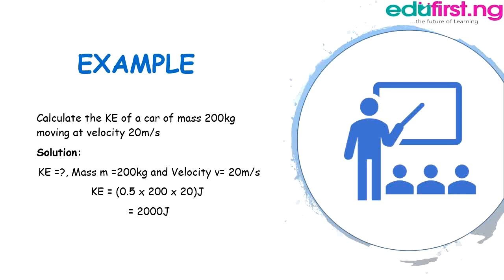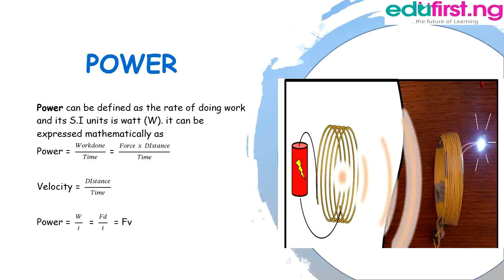2000 Joules can also be converted to 2 kilojoules. Moving on to power: power can be defined as the rate of doing work, and its SI unit is the Watt. Mathematically, power equals work done over time, which is also equal to force times distance over time. Since velocity equals distance over time, power also equals force times velocity.